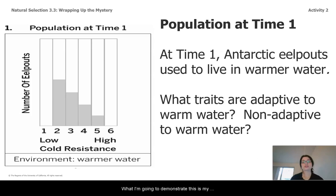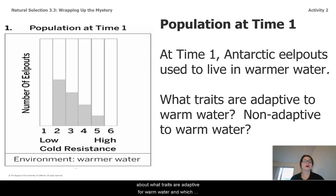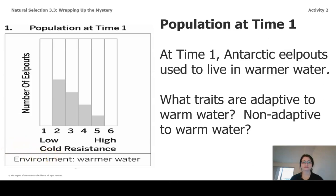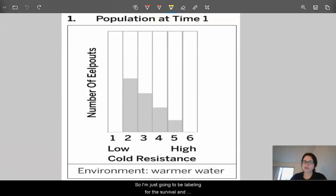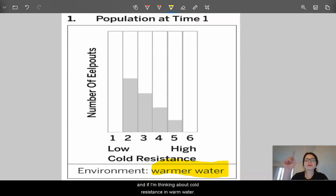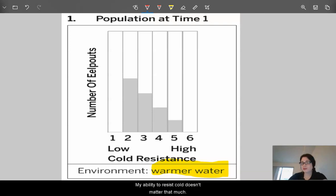For what I'm going to demonstrate, this is my histogram of the Antarctic eel pout at time one, when they lived in warm water. We're going to start by thinking about what traits are adaptive for warm water and which are not. We're going to consider the trait of cold resistance.